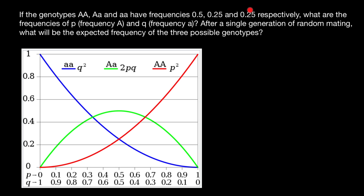According to our problem, another 25% is homozygous recessive. When the frequency of the homozygous dominant genotype is 50%, we expect the frequency of the homozygous recessive genotype to be somewhere around 10%. But according to our problem, it is 25%. So we know that this population is not in Hardy-Weinberg equilibrium.